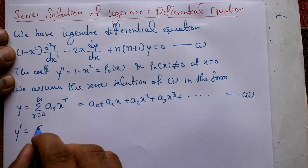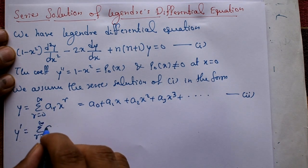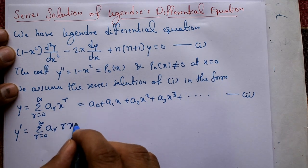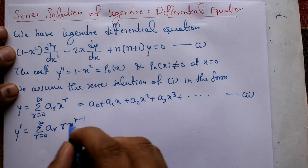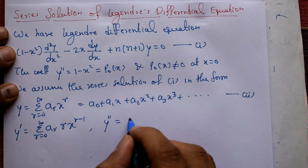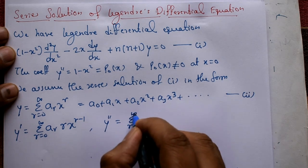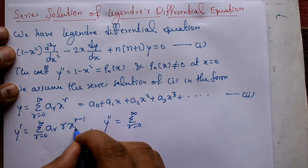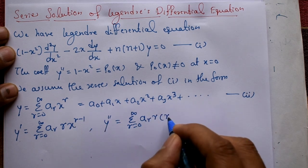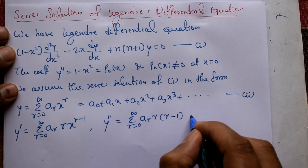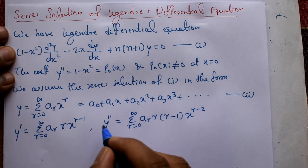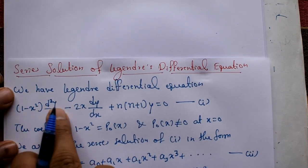Now we compute y' and y''. Differentiating equation 2: y' = Σ(r=0 to ∞) aᵣ·r·x^(r-1). Differentiating again: y'' = Σ(r=0 to ∞) aᵣ·r·(r-1)·x^(r-2).